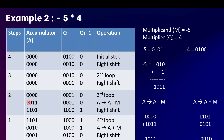When count equals 2, the accumulator is 0000, Q is 0001, and Q minus one is 0. As the LSB of Q is 1 and Q minus one is 0, we perform A equals A minus M on the accumulator. The accumulator becomes 1011. We then perform an arithmetic right shift, giving accumulator 1101, Q 1000, and Q minus one becomes 1. Count decrements to 1.